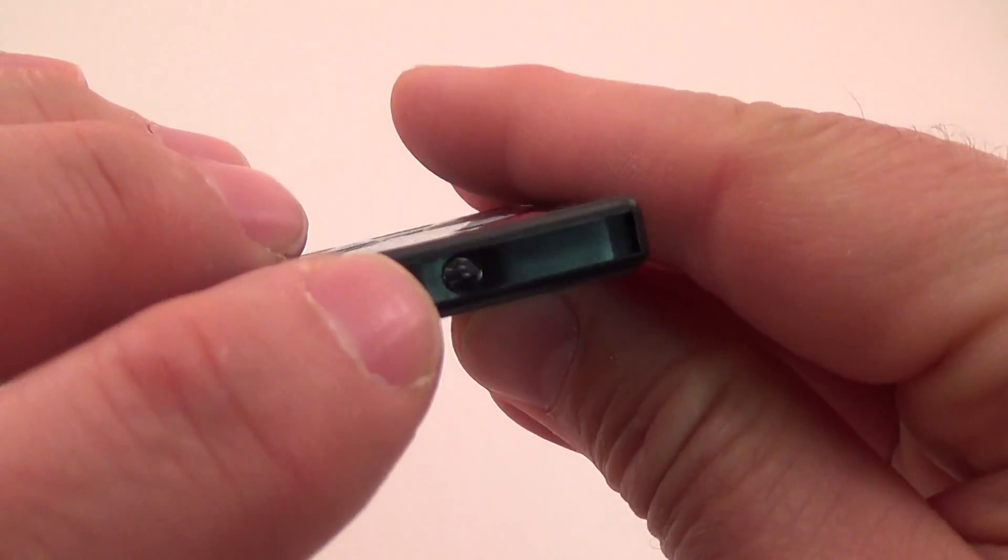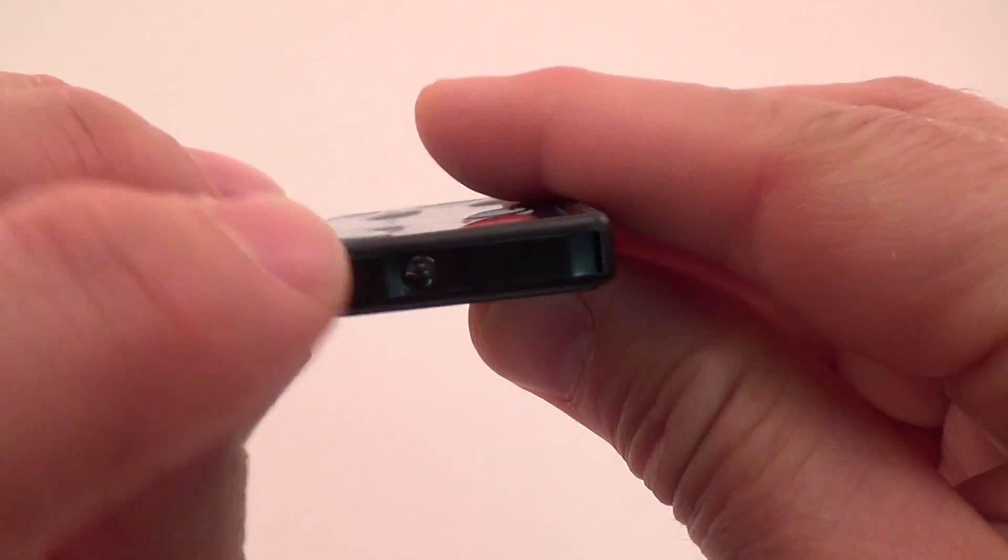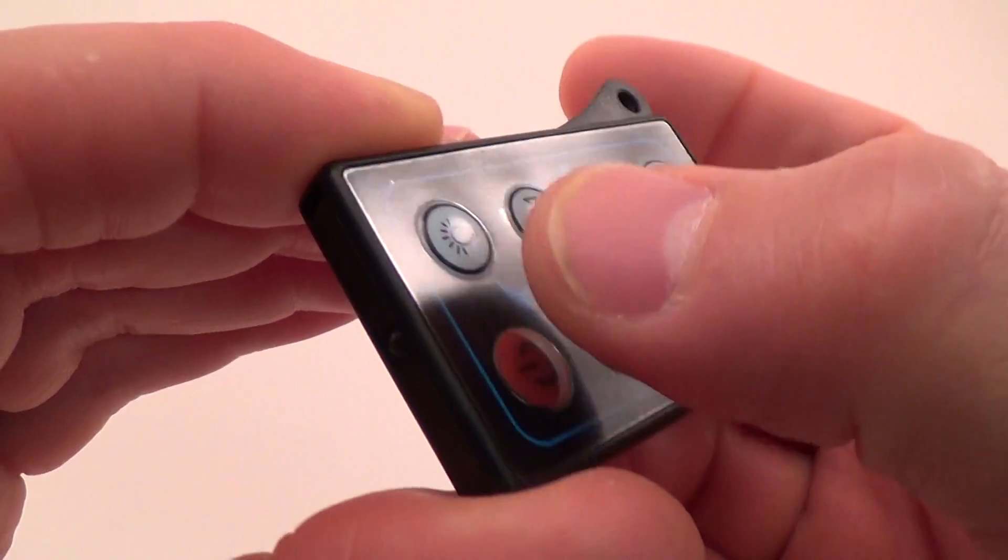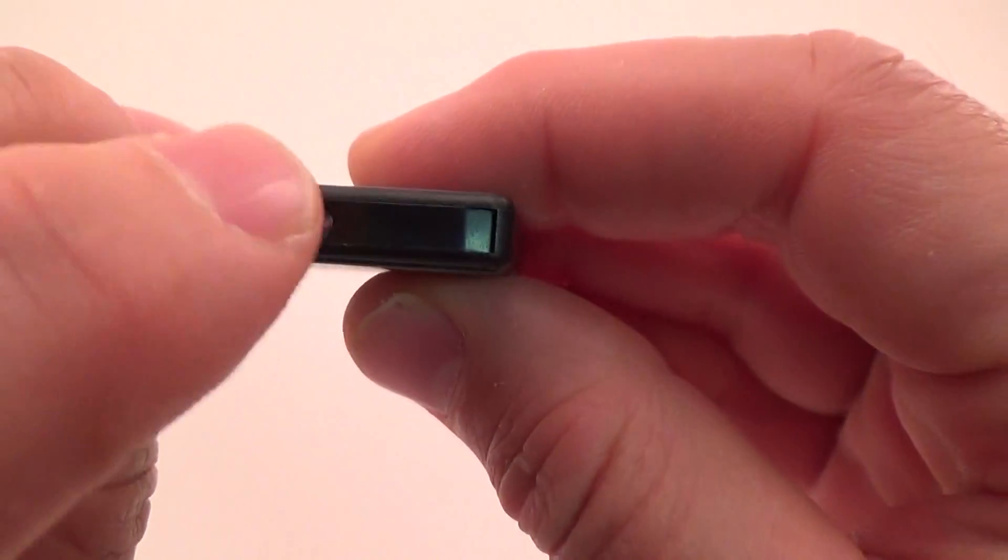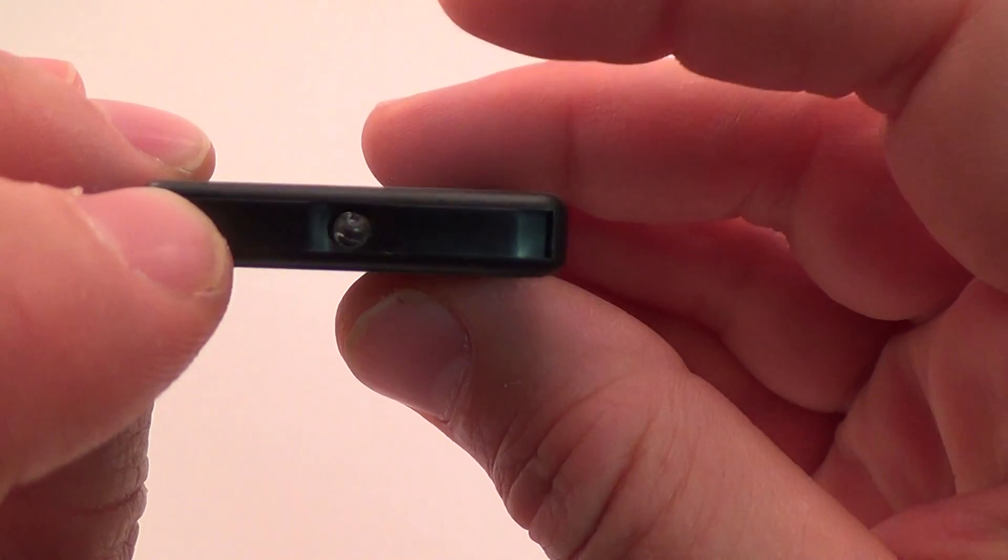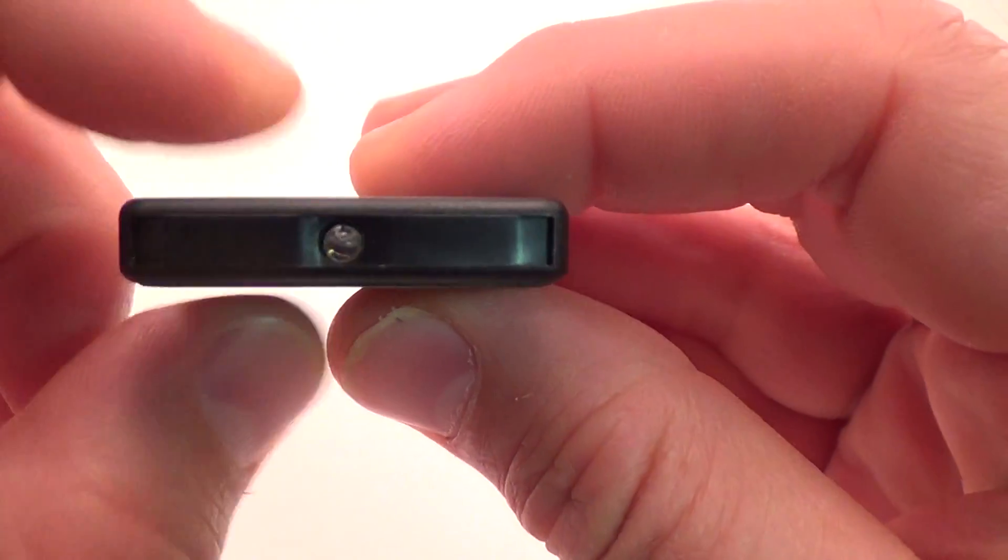It has an infrared LED on the front there that when you press any one of these buttons down, it emits a signal. Now normally you can't see that light with your own eyes, so if you press this button down, any of these buttons, you won't see anything.